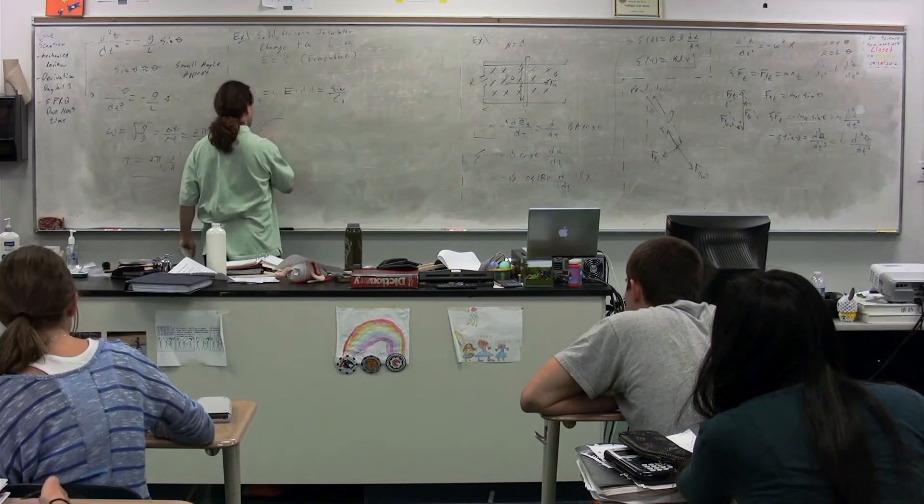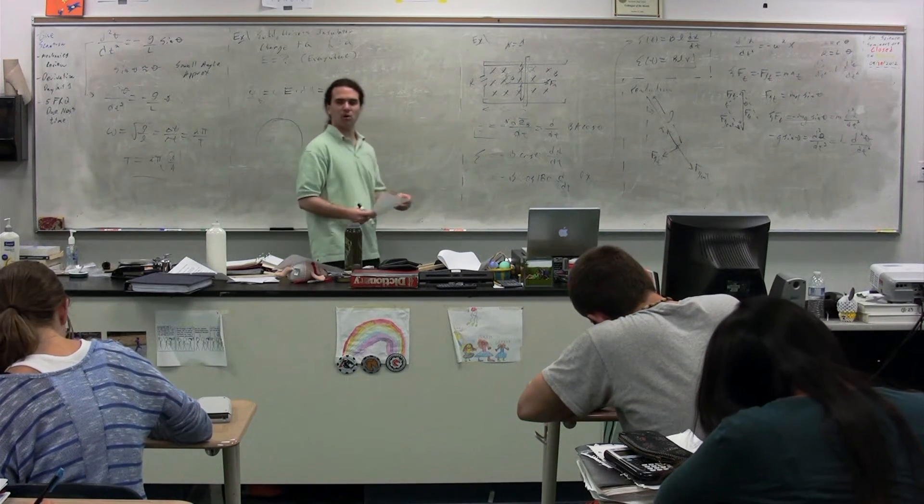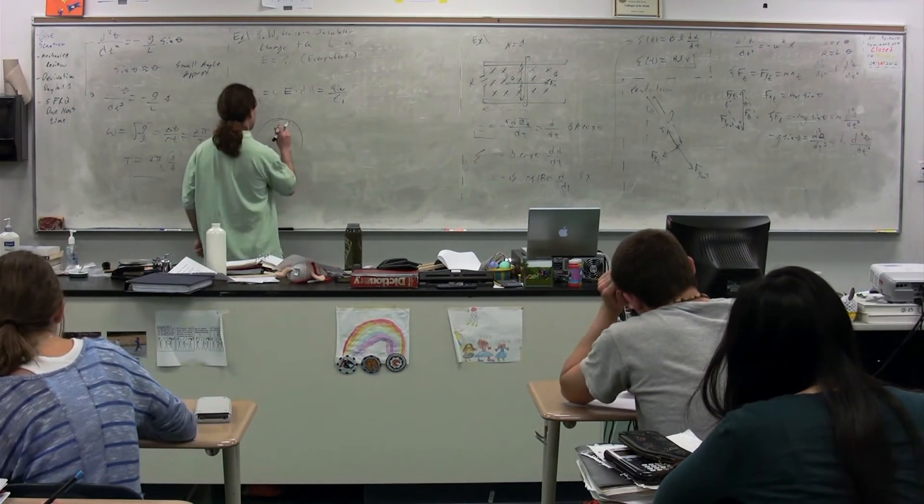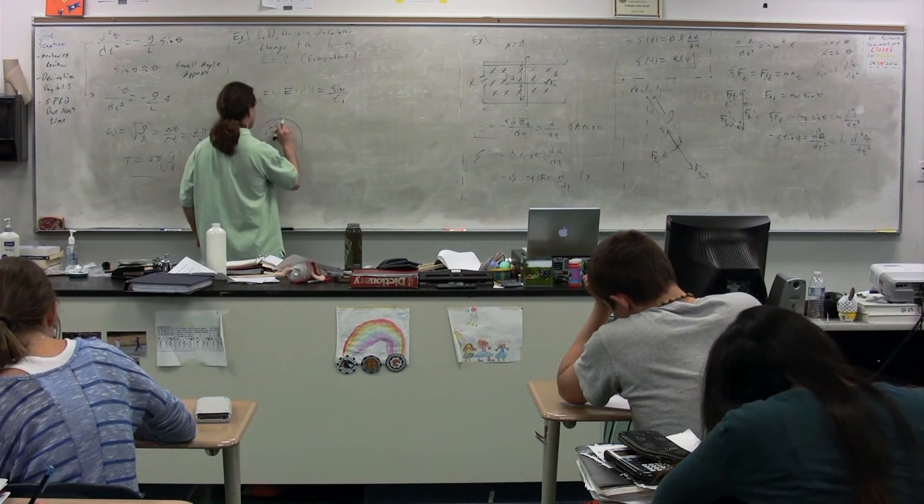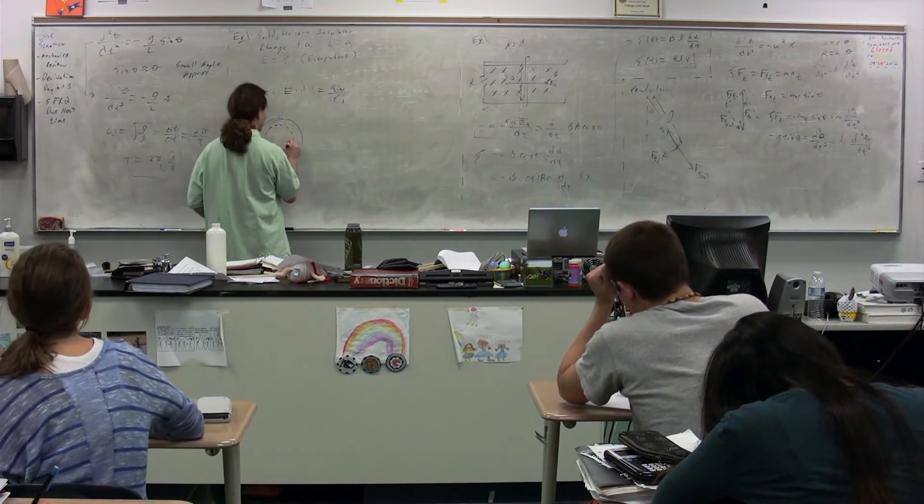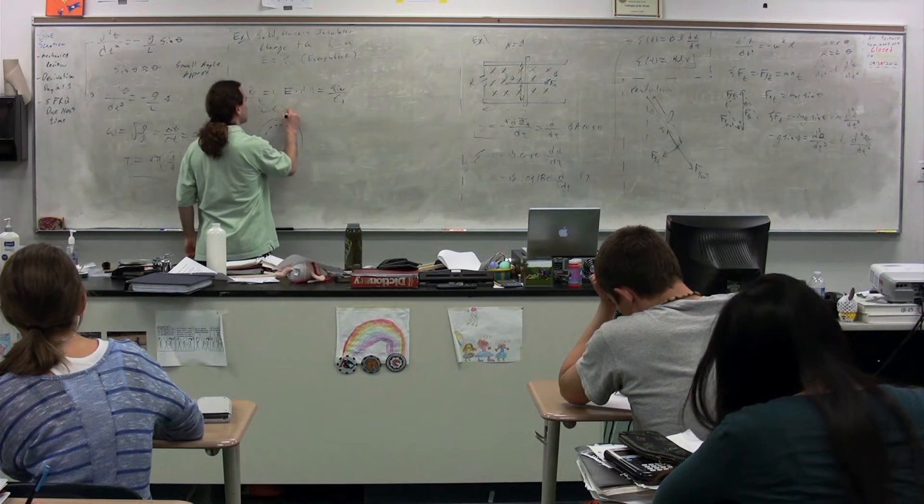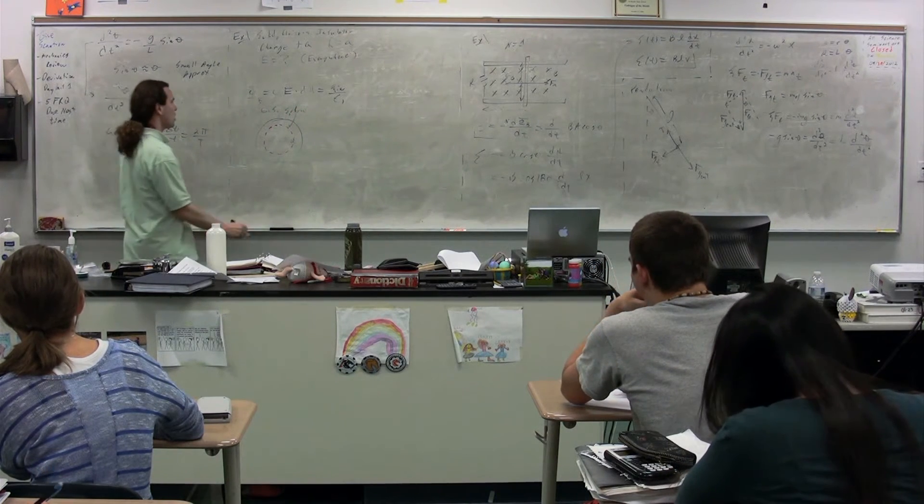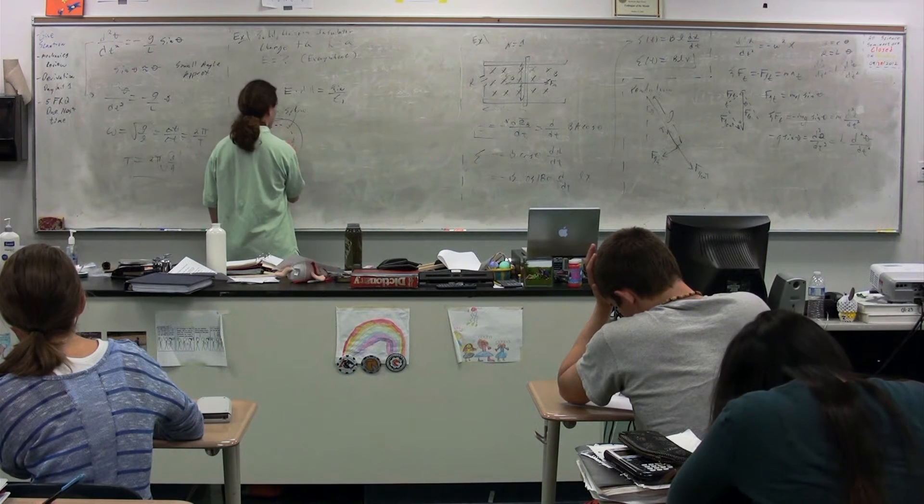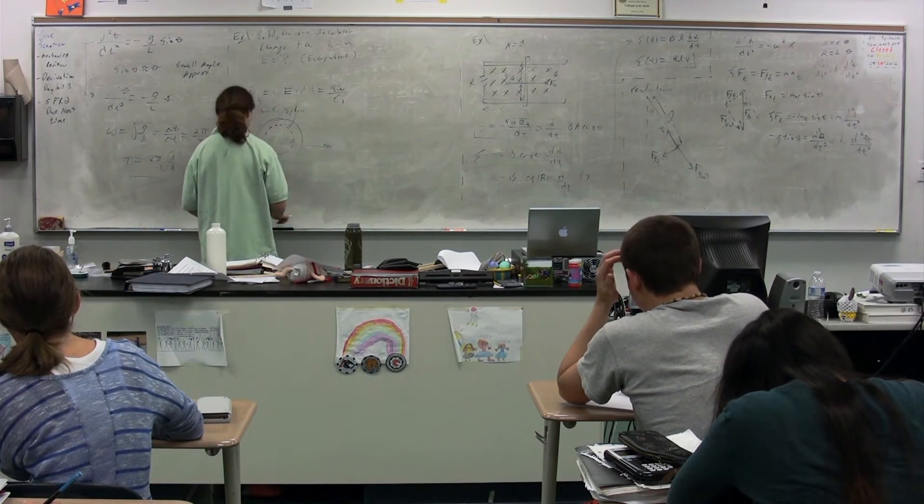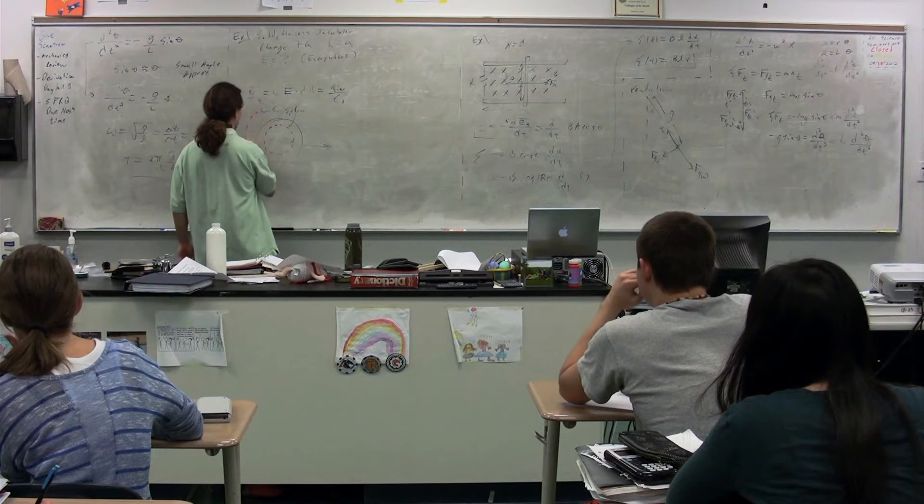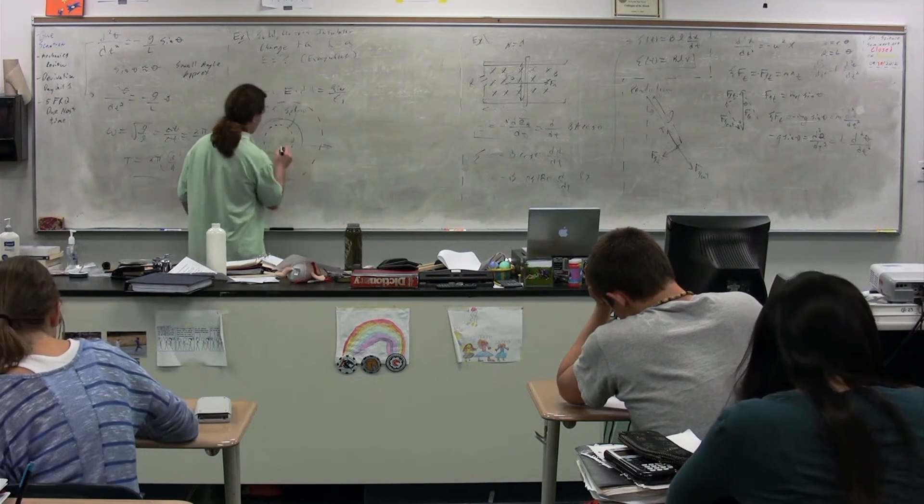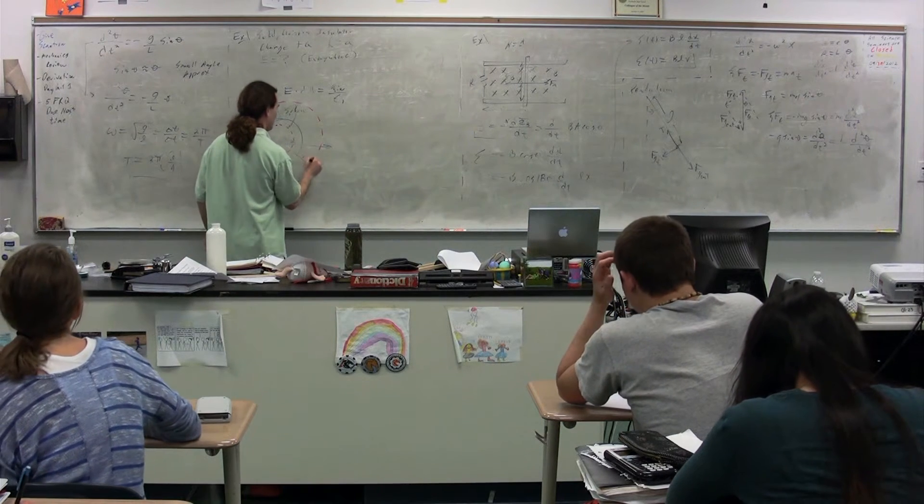So we have our sphere. We're going to start out by drawing what class? Gaussian surface. You love your Gaussian surfaces. Draw your Gaussian surface. There it is. Our Gaussian surface has a radius R. Our Gaussian surface, in this particular case, is a sphere, a concentric sphere. We're going to start out with R greater than A. So our first Gaussian surface is this one, right here, where R is greater than A.